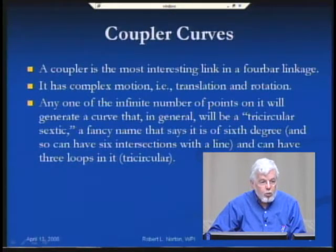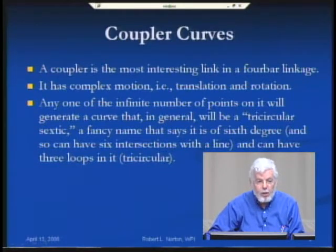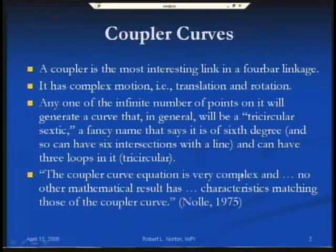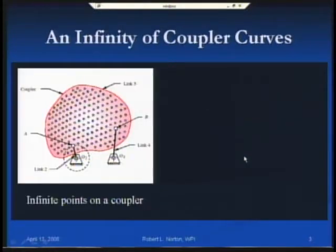We can have an infinite number of points on the coupler, and any one of those points will generate a curve that in general is a tricircular sextic — just a fancy terminology indicating that it is of sixth degree and can have three loops. A fellow named Noel back in 1975 made this comment: 'The coupler curve equation is very complex and no other mathematical result has characteristics matching those of a coupler curve.'